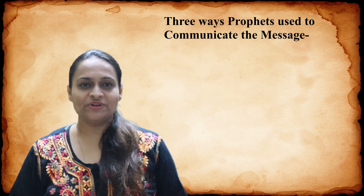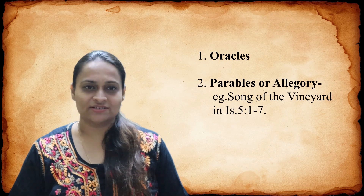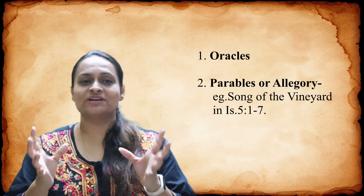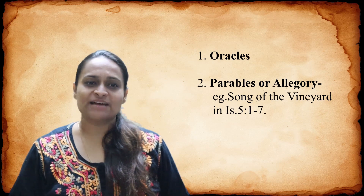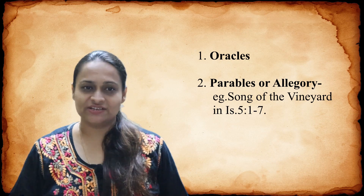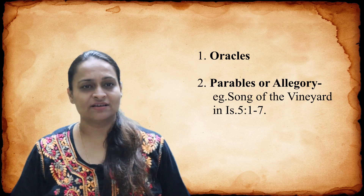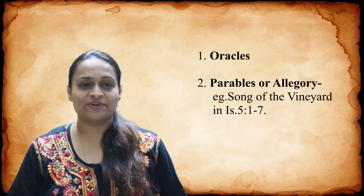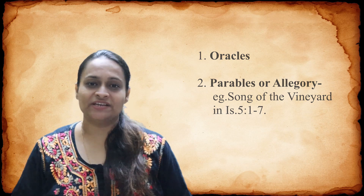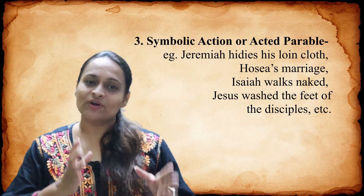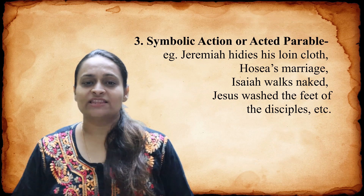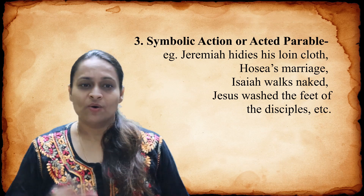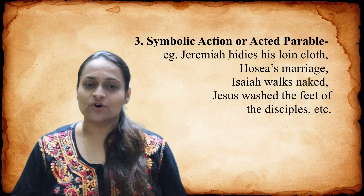Now let us look at the three ways of communication which the prophets used. First, oracles — messages received by prophets directly from God, expressed in the same words as God spoke to them: 'Thus says the Lord.' Second, parables or allegories — parables are stories to teach spiritual lessons; allegories are detailed stories with many points but one purpose. We see the example of a parable in Isaiah chapter 5, verses 1 to 7 — the song of a vineyard. Third, symbolic action or acted parable. We have seen many times that the Old Testament prophets behaved very weirdly — examples include Jeremiah hiding his loincloth, Hosea's marriage, Isaiah walking naked, and Jesus washing the feet of his disciples.